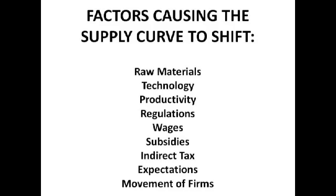Raw materials are a main component of production. When the prices of raw materials rise, the cost of production rises, which means some firms are forced out of the market because they can no longer afford to produce and make a profit. This causes a left shift of the supply curve. If raw materials decrease in price, firms can make more for less, which causes a right shift of the supply curve, because more firms enter the market and produce more.